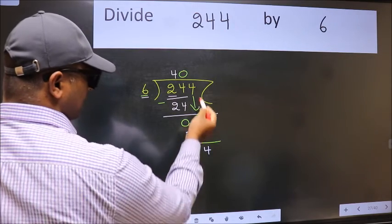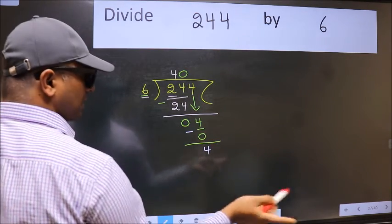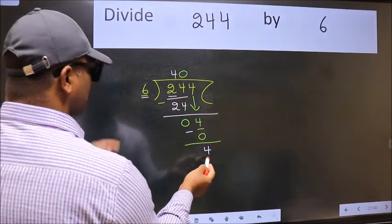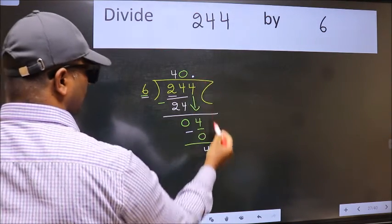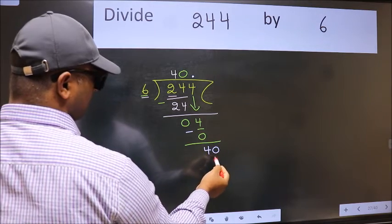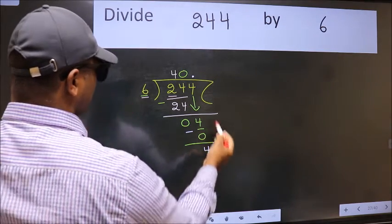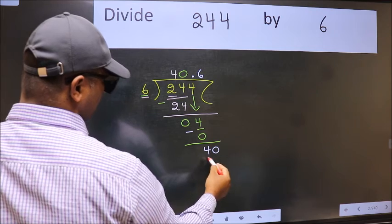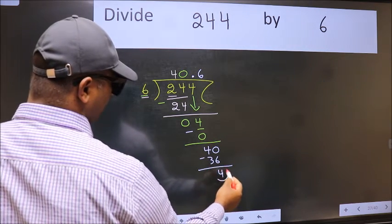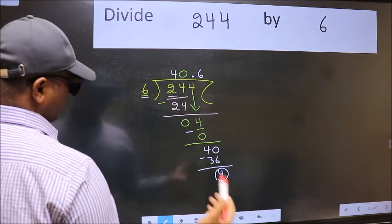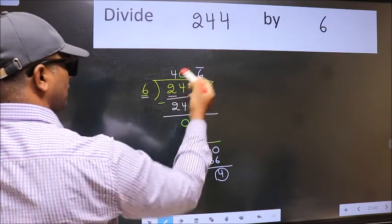Over here, we did not bring any number down. And 4 is smaller than 6. So now we can put dot and take 0. So 40. A number close to 40 in 6 table is 6 times 6, 36. Now we subtract. We got 4 again. That means we get a bar on this number.